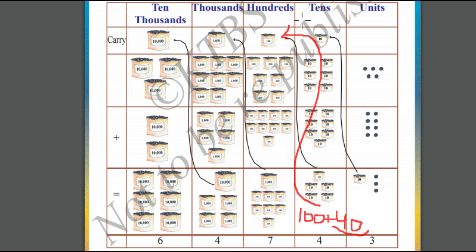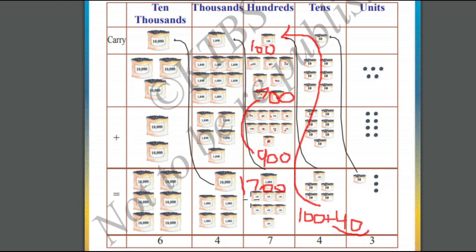Now let us see hundreds place. In hundreds place of the first number, we have 700. In the second number, we have 900 beads. Remember, we also have a carry of 100. So 700 plus 900 plus 100 is equal to 1,700. We cannot represent 1,700 in the hundreds place. So we will split it as 1,000 plus 700 — we carry 1,000 to the thousands place and write 7 in the hundreds place.